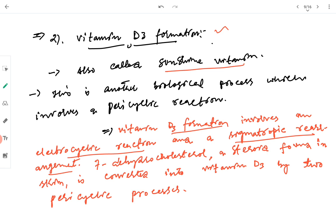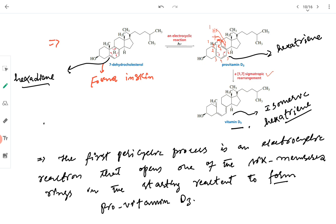Two pericyclic reactions occur back to back in vitamin D formation: one is an electrocyclic reaction, and another is a sigmatropic rearrangement. The reaction starts from 7-dehydrocholesterol, a steroid found in skin, and is converted into vitamin D3 by two pericyclic processes. The first process is an electrocyclic reaction that opens one of the six-membered rings in the starting reactant to form provitamin D3.